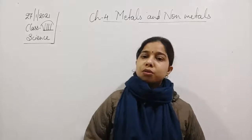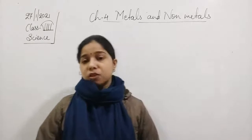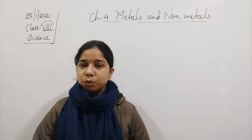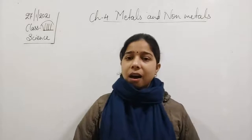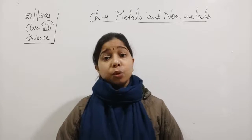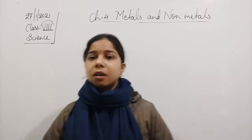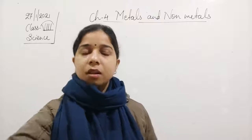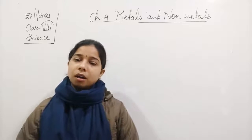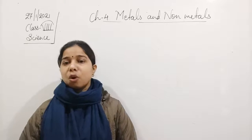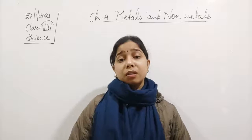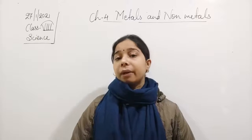Hello students. In the previous class, in this chapter on metals and non-metals, we were talking about what corrosion is and how we can prevent it. Corrosion occurs due to the action of moist air — meaning water and oxygen — which causes the formation of a hydrated oxide, or rust, causing the metal to get corroded.